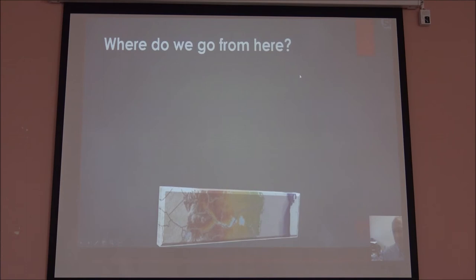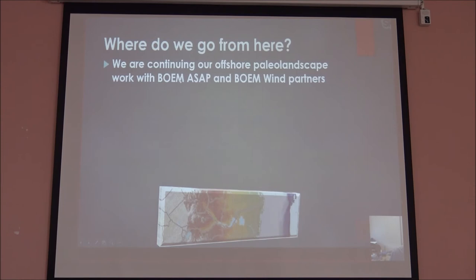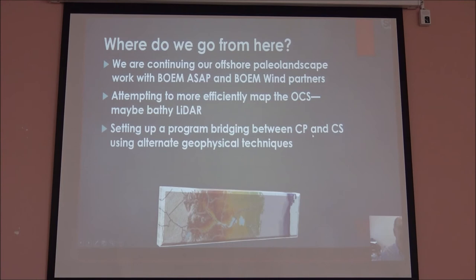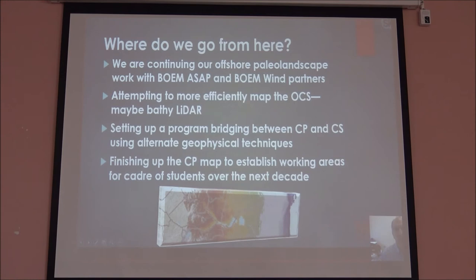So where do we go? We're going to try to continue doing offshore paleo landscapes, work with partners, and attempt to more efficiently map the outer continental shelf. On the outer continental shelf, the water is very clear — I've been scuba diving in 75 feet, you can see wrecks on the bottom — so we know that at 25 meters we have a pretty good probability of being able to map it. We're trying to use alternative geophysical techniques: a lot of magnetometry and rare earth element mapping. And finishing up a large coastal plain map that we can then use to test some of the offshore areas.